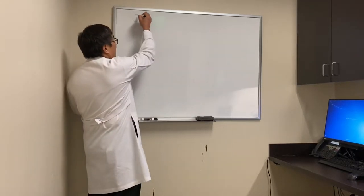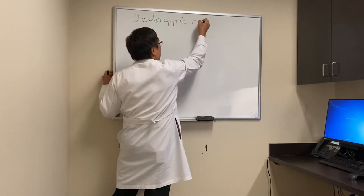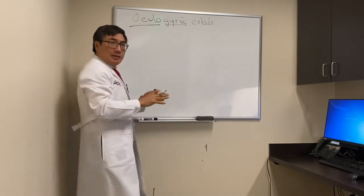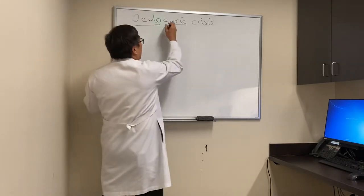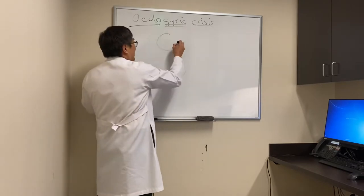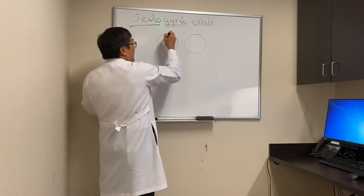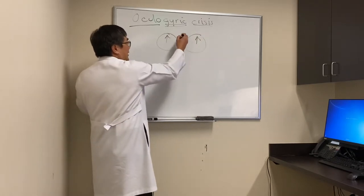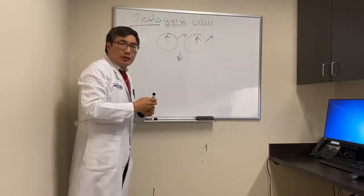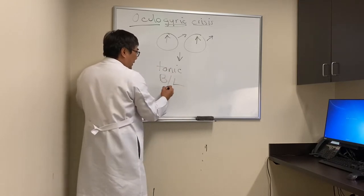Today we're going to talk about oculogyric crisis. 'Oculo' — the eyes — 'gyrate' — turn. It looks like a crisis because it occurs acutely. We have tonic elevation of the eyes upward, although they can deviate upward and laterally, or in rare cases downward. So it's tonic, it's bilateral, it's conjugate.